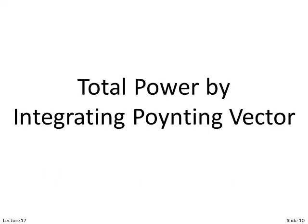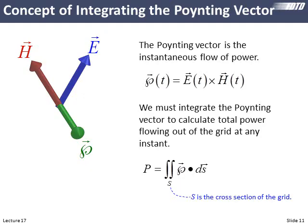Now let's step through the easy way of calculating transmission and reflection. E cross H gives us a Poynting vector that tells us the instantaneous flow of power. On our two-dimensional grid we integrate that Poynting vector across the complete top and bottom of our grid to get total power flow — once on the reflection side, once on the transmission side. For a 2D grid this is a single integral; for a 3D grid it would be a double summation.